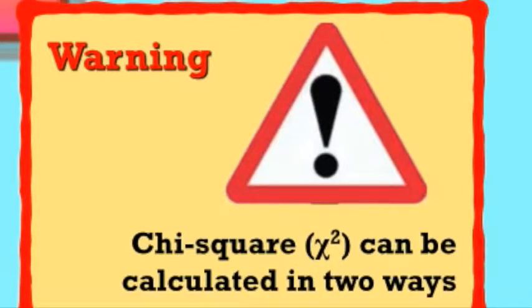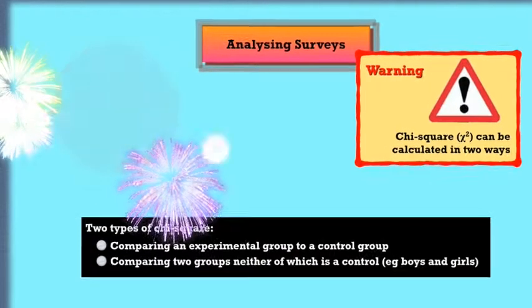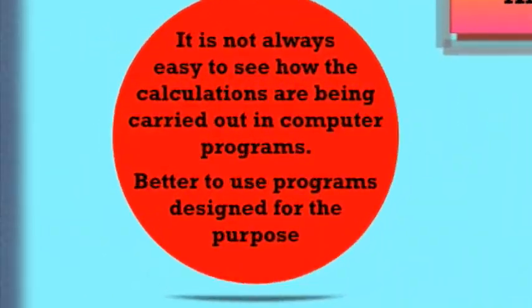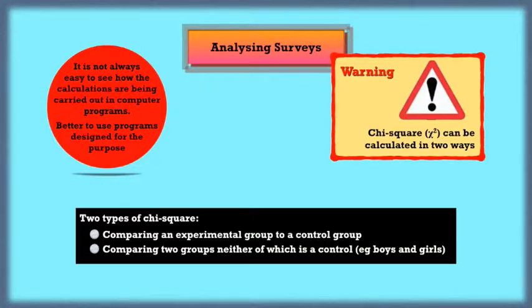We're going to watch chi-square. Depends whether it's a control group or not. In this case, there was. And computer programs sometimes don't make it clear which way they're calculating it. So I recommend using a set of programs designed for the purpose and contacting me by email. I can email the attachment too.